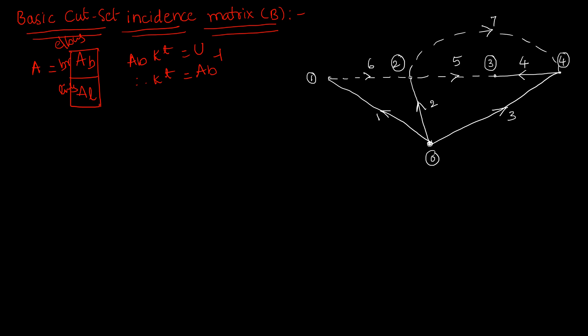Now coming back to our basic cut set incidence matrix. What will this matrix tell us? It gives the information about the incidence of elements to basic cut sets of a connected graph. We consider a connected graph here. This connected graph is made up of both branches and links. The branches are 1, 2, 3, 4, and the links are 5, 6, 7.